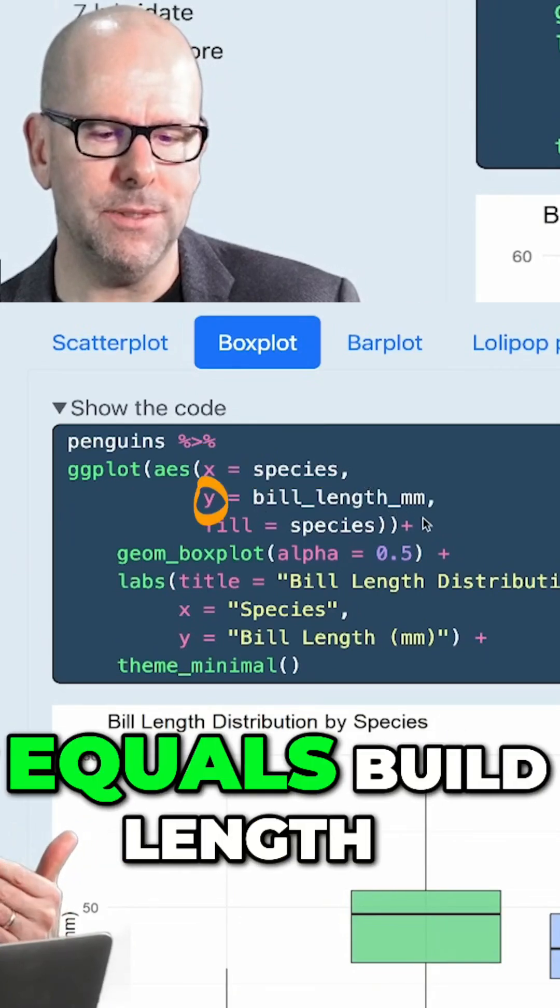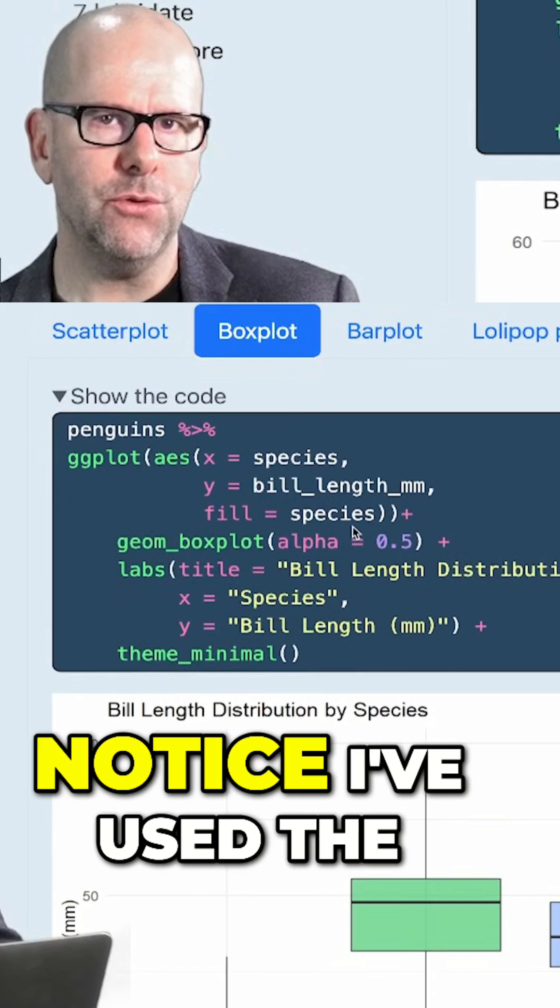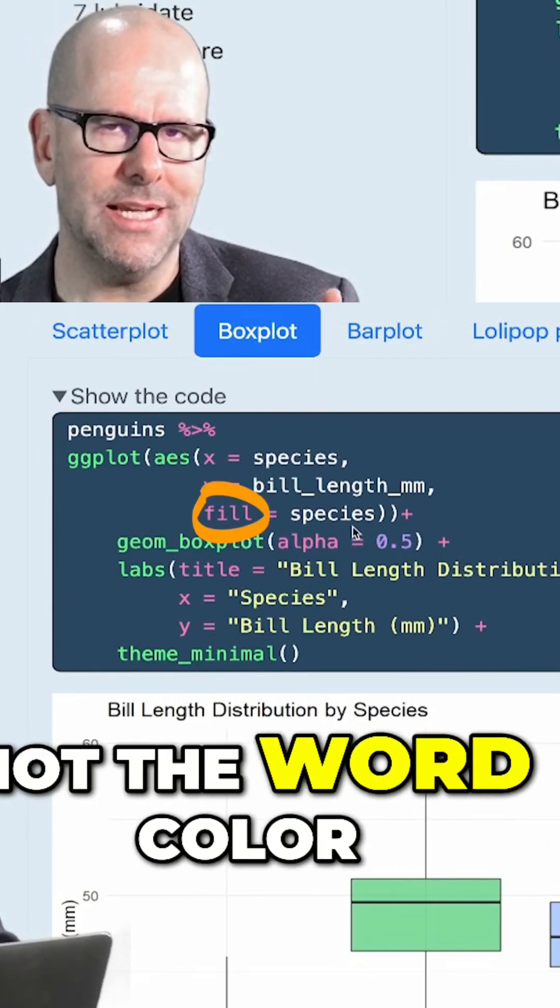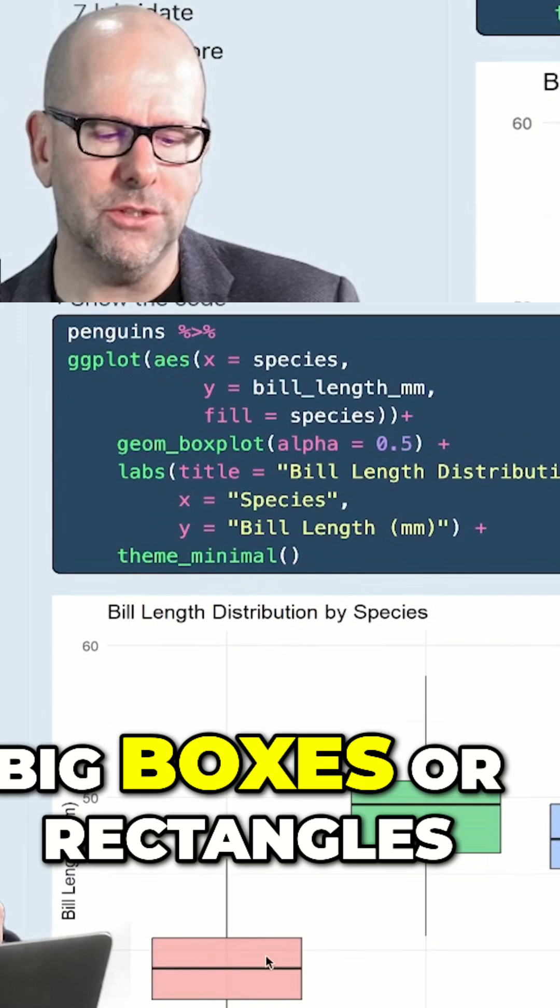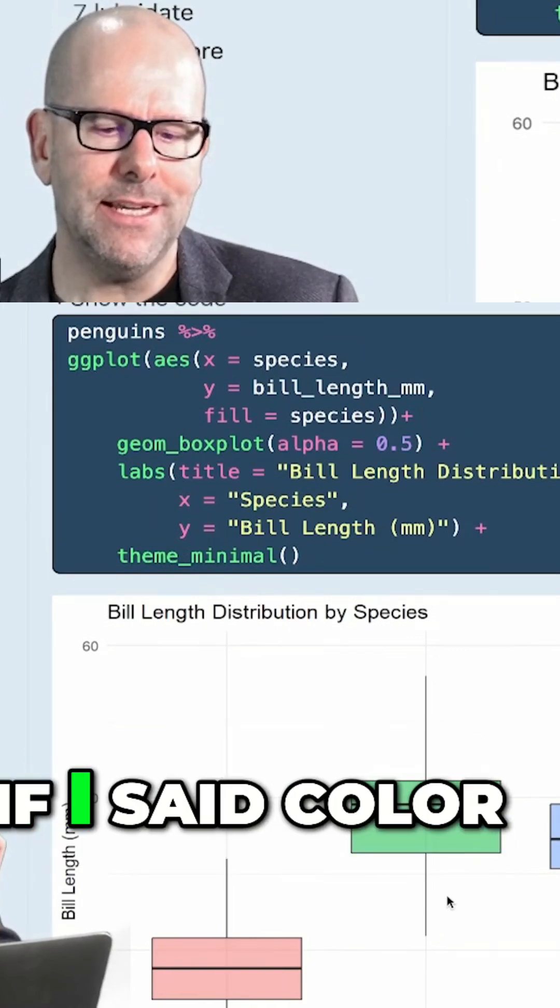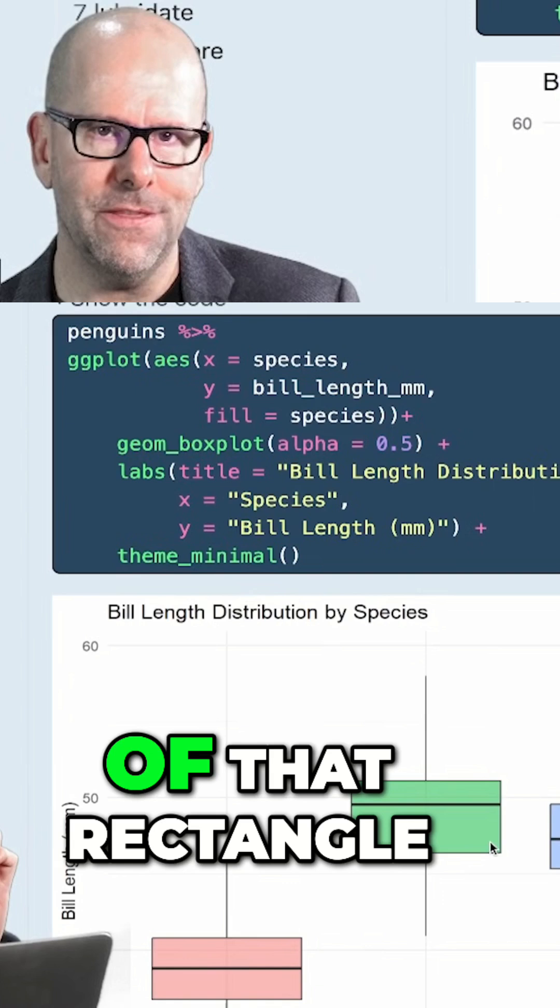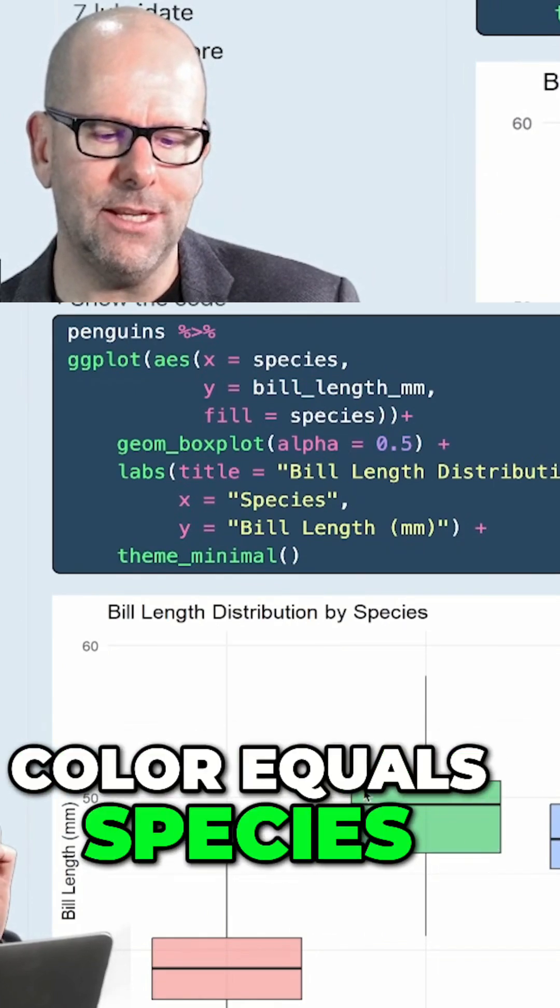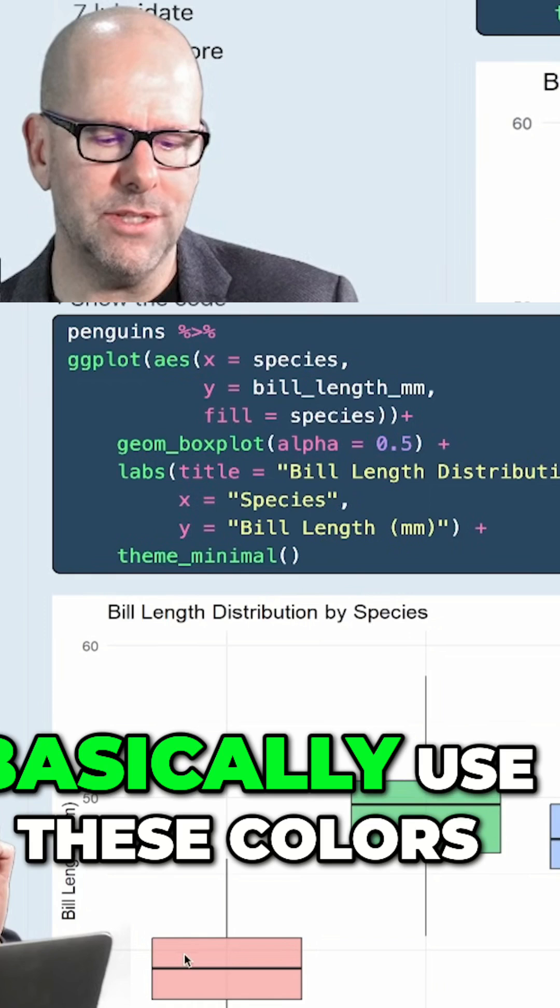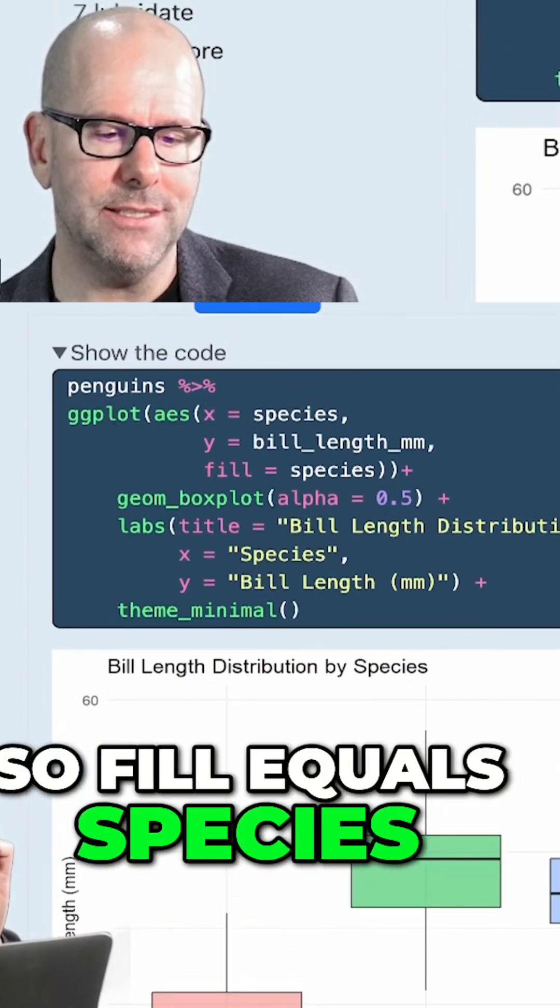x equals species, that's the x-axis, y equals bill length, that's the y-axis, and fill equals color. Notice I've used the word fill here and not the word color. The reason is that these are sort of big boxes or rectangles. If I said color, it would think that I meant the outline of that rectangle. So if I said color equals species, it would basically use these colors just to do the outline and not the inside. So fill equals species is important.